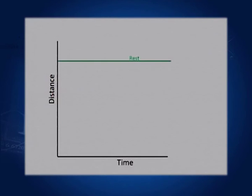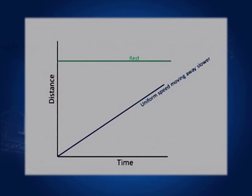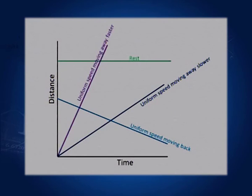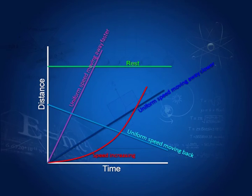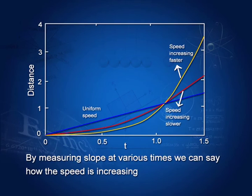We draw various graphs to show the position of a certain body. Here the body is at rest — the distance is not changing with time. Here the body is moving away with uniform speed. Here the body is coming towards us — the slope is negative, therefore the velocity is negative. Here it is again moving away, but this slope is larger than the earlier slope, so the speed is higher. Lastly, the red line shows speed increasing. If we read various slopes at various times, we can say whether speed is increasing or decreasing. The blue line shows uniform speed, while the red and dark lines show increasing speed.